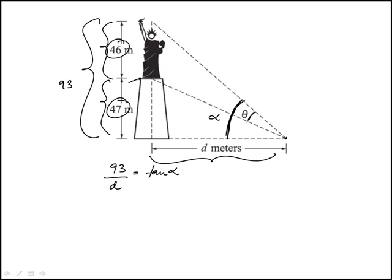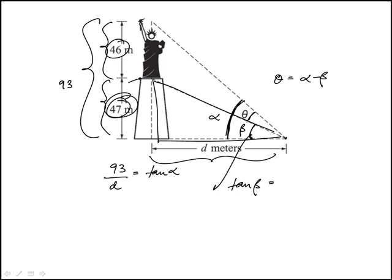Now this inside angle I'm going to call beta, because theta would be alpha minus beta, so I have to find that difference. Considering this right triangle, tangent of beta equals 47 over d.